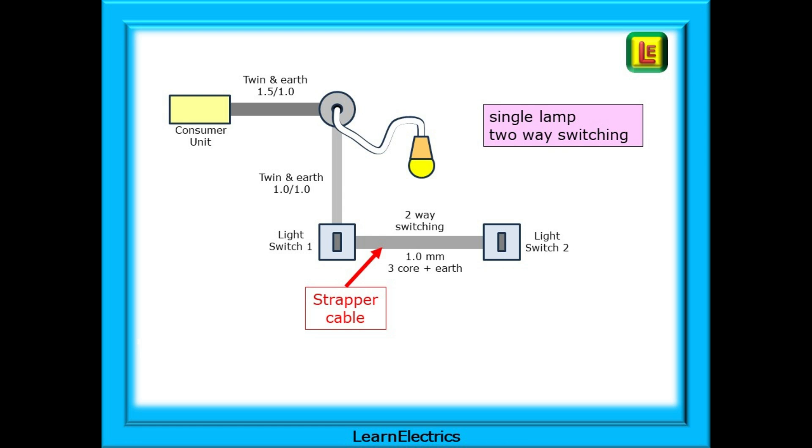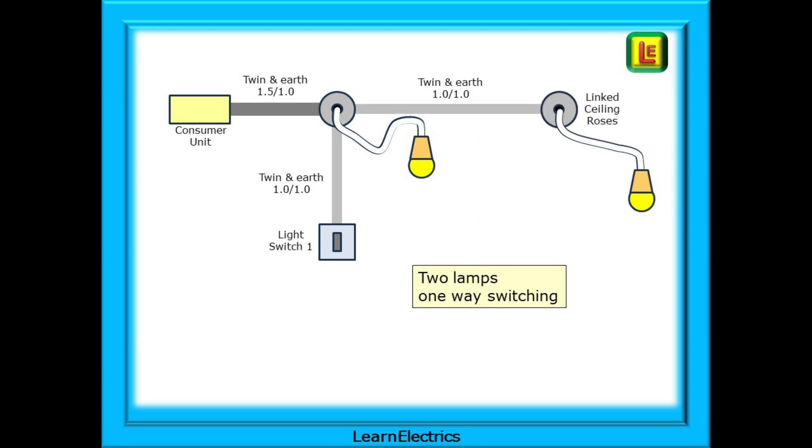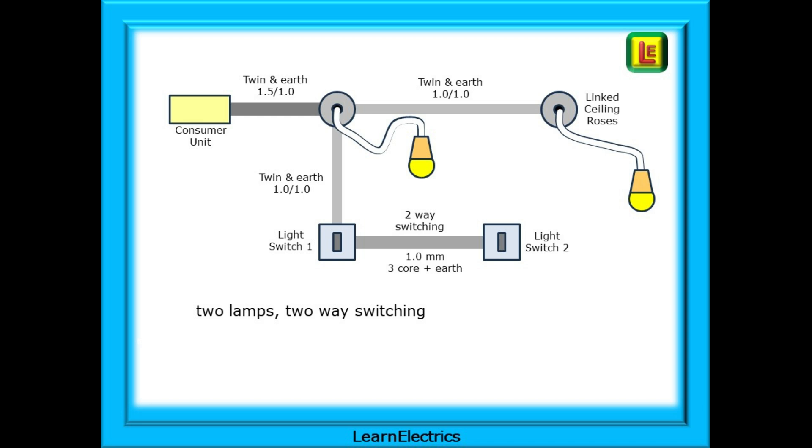This can be made into a two-way switching circuit by adding a 1 millimeter 3 core plus earth cable, often called a strapper cable. Or we could stick with the one-way switching but have two lamps controlled by this one switch. We can go to two-way switching with two lamps by adding our strapper cable to the previous circuit.